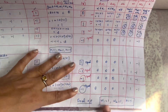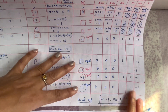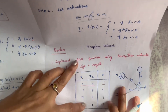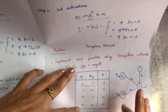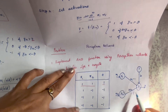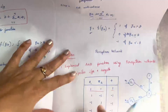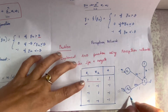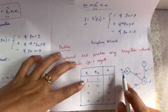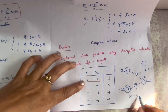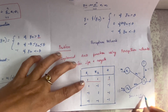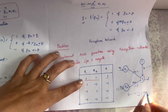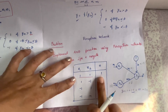The final weights for this Perceptron Network are w1=1, w2=1, and b=-1. Let us verify: for input (1,1), y_in = -1 + 1*1 + 1*1 = 1, which is greater than 0, so y = 1. This is the correct AND output. For input (1,-1), y_in = -1 + 1*1 + (-1)*1 = -1, which is less than 0, so y = -1, which is also correct.